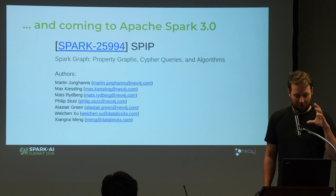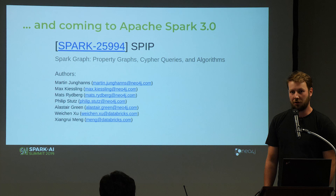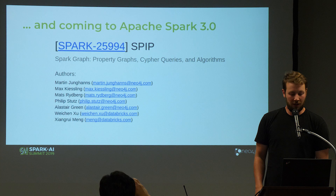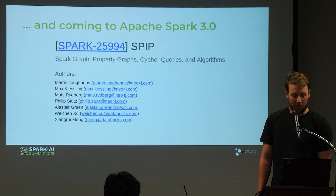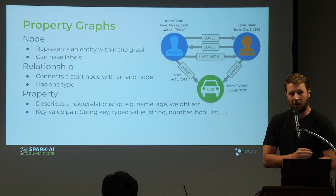Graphs are also coming to Spark with Spark 3.0. We have a thing called the SPIP, which is a Spark Improvement Proposal, and the community voted yes on having graphs in Spark 3.0. This will come later this summer and you will get query capabilities — you can run Cypher on property graphs.